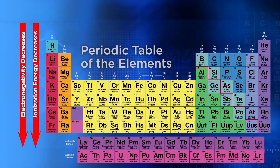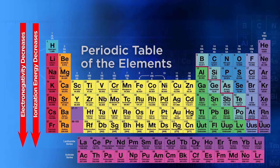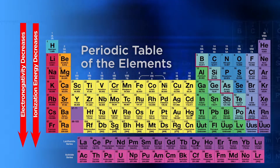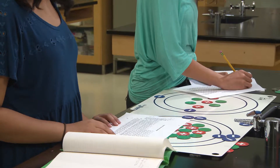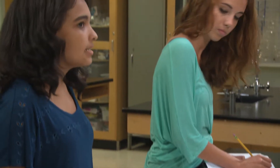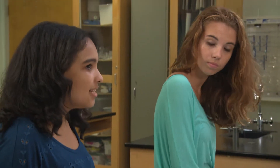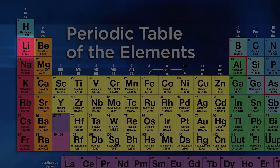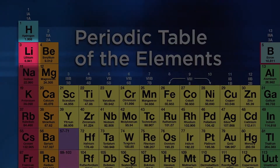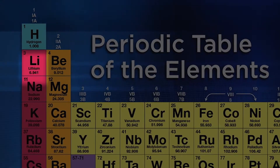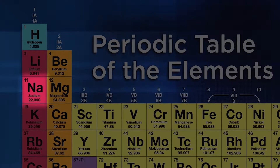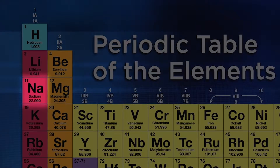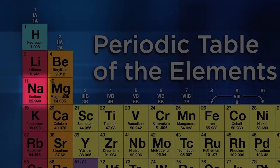Now let's see what Danica and Karina found regarding the atomic radius as we move down a group on the periodic table. Once we read the definition of atomic radius, it was pretty easy to see the increase going down a group. Lithium is in period two, so it only has two energy levels. Sodium is in period three, so it has three energy levels. That extra energy level makes sodium bigger than lithium.